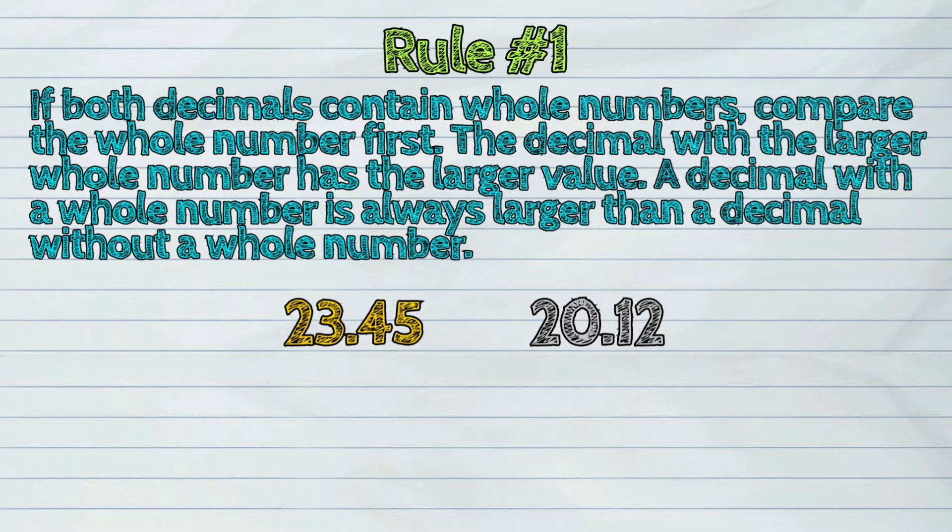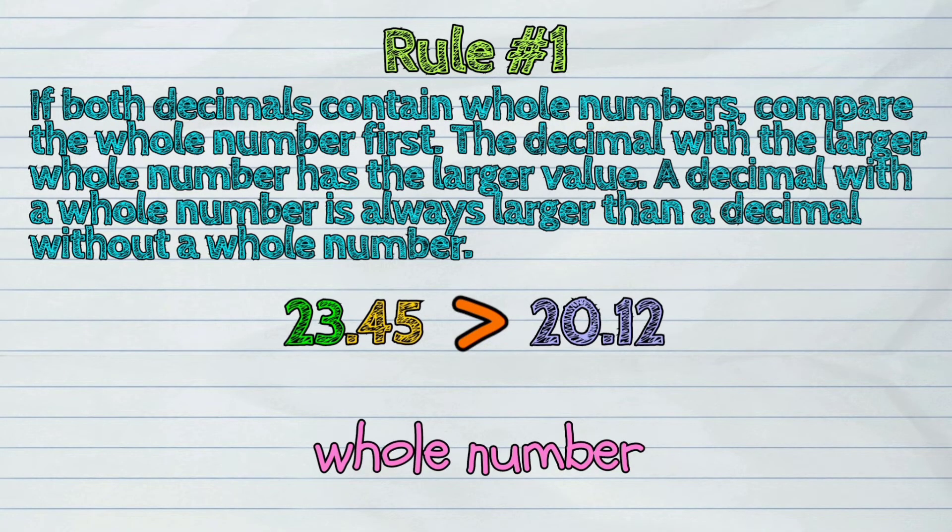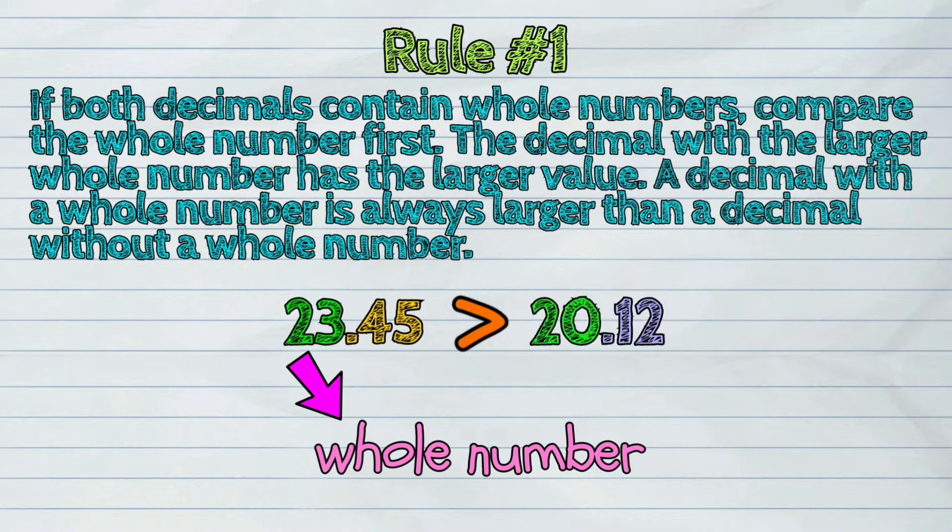23 and 45 hundredths is greater than 20 and 12 hundredths since the whole number 23 is larger than 20.